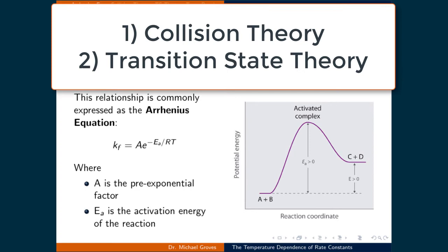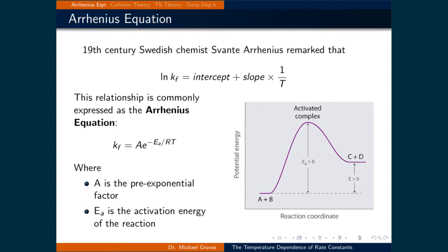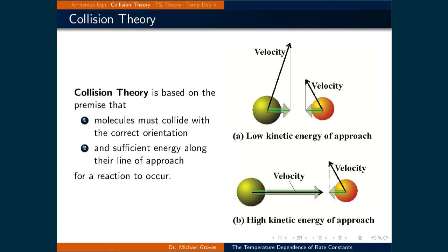We will now examine two theories — collision theory and transition state theory — and we will find that they produce relationships that are Arrhenius in nature. By doing so, we will start to elucidate the physical meaning behind the terms in the Arrhenius equation. Collision theory is based on the premise that molecules must collide with the correct orientation and sufficient energy along their line of approach for a reaction to occur.